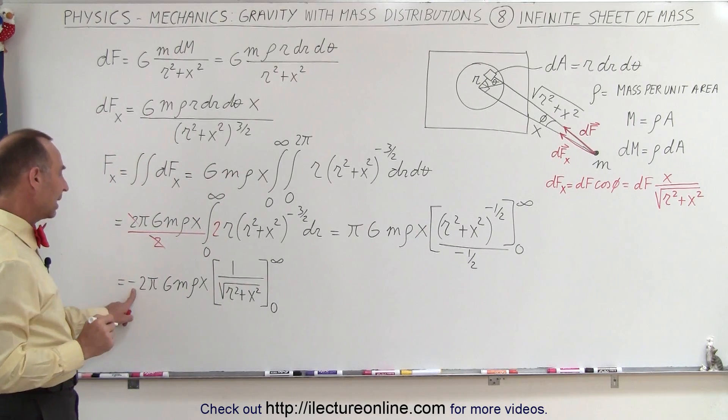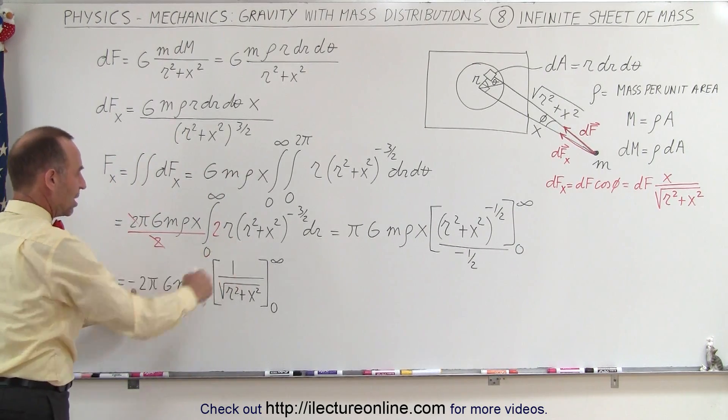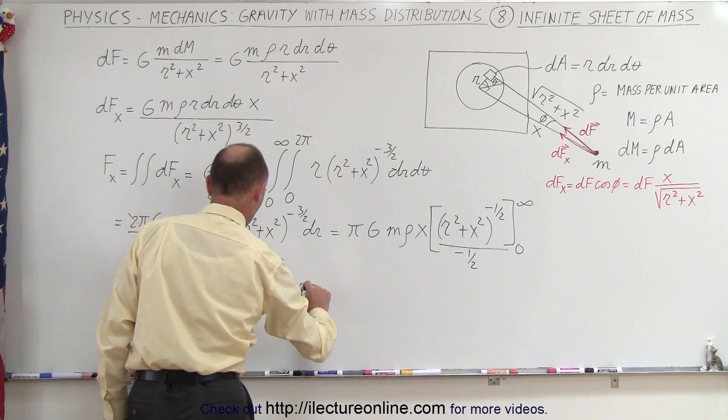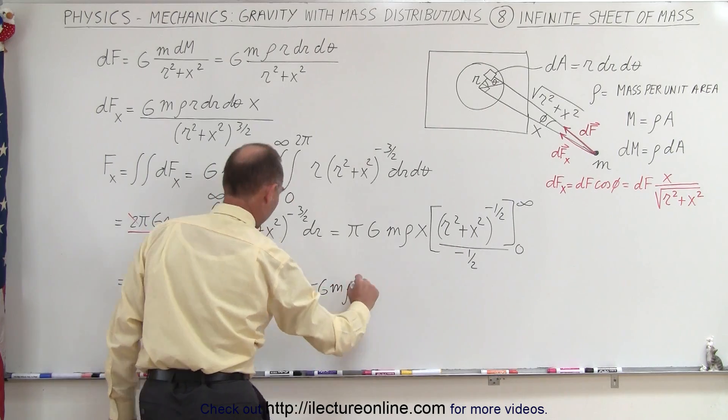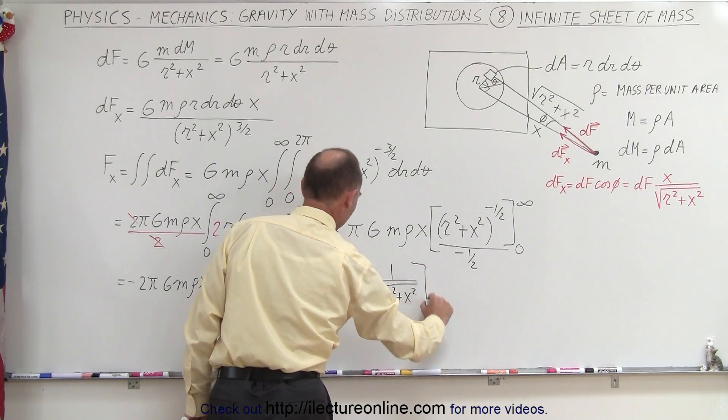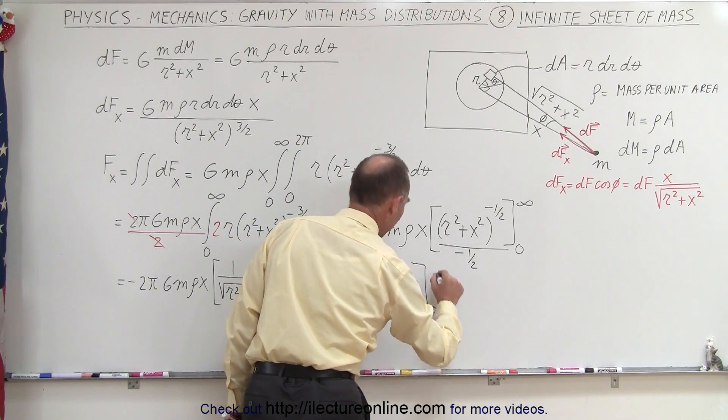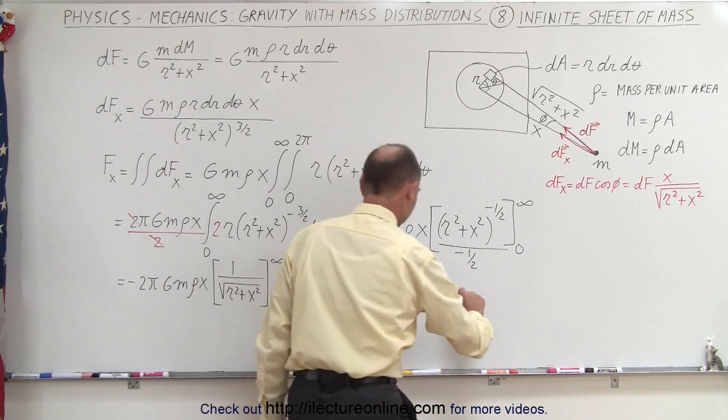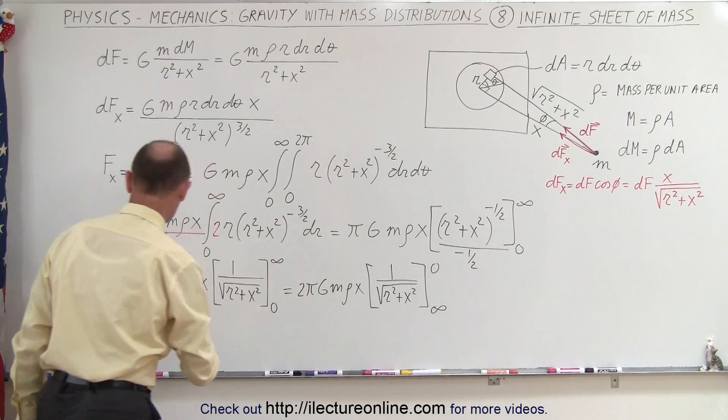Well, we don't like the negative here. So what we can do is we can switch the limits and make this into a positive. So this is equal to 2 pi. And now the limits are going to go from infinity to 0. Okay, now when we plug in the upper limit, we get the following. Let's do it over here.